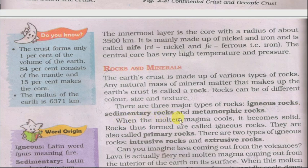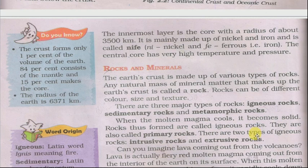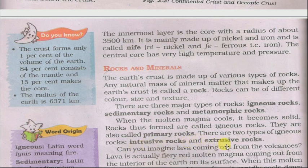The three types are: Agnes (igneous) rocks, sedimentary rocks, and metamorphic rocks — Aagney chattan, avsadi chattan, aur kayantrit chattan. When the molten magma cools, it becomes solid rocks — thus formed are called igneous rocks. They are also called primary rocks. There are two types of igneous rocks: intrusive rock and extrusive rock.